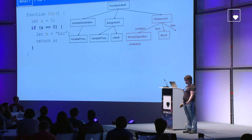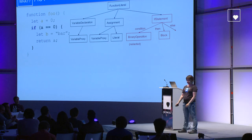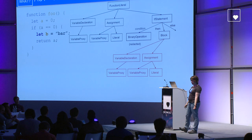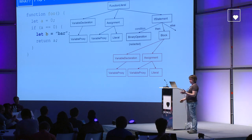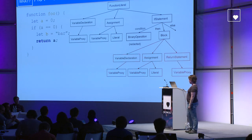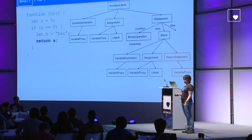Then there is an if statement. It has a condition, a then part, and an else part, which is empty here. The then part contains more code — another variable declaration and an assignment — and again we create variable proxy objects to represent the name of the variable. And then there is a return statement, again with a variable proxy. So this is the AST that the parser generates based on the code.